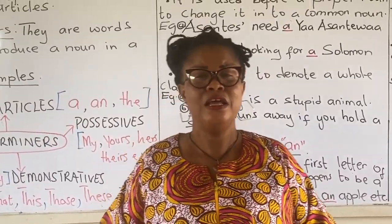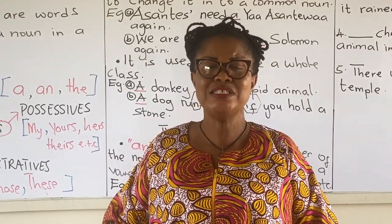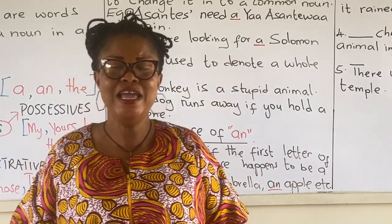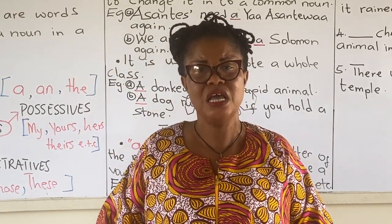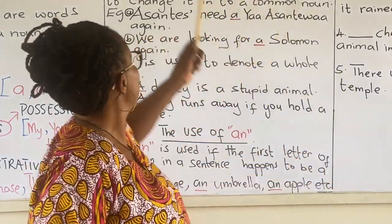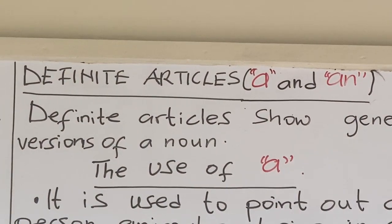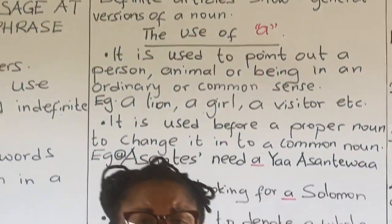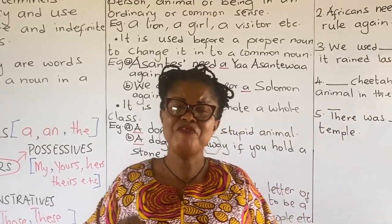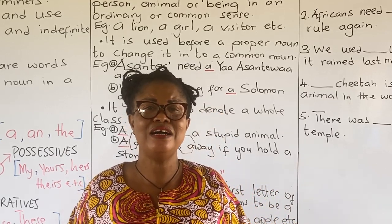But in today's lesson, we are going to look at the articles: 'a', 'an', and 'the'. With articles, we have definite and indefinite articles. The indefinite articles are 'a' and 'an', and the definite article is 'the'. Today we are going to look at the indefinite articles 'a' and 'an'.